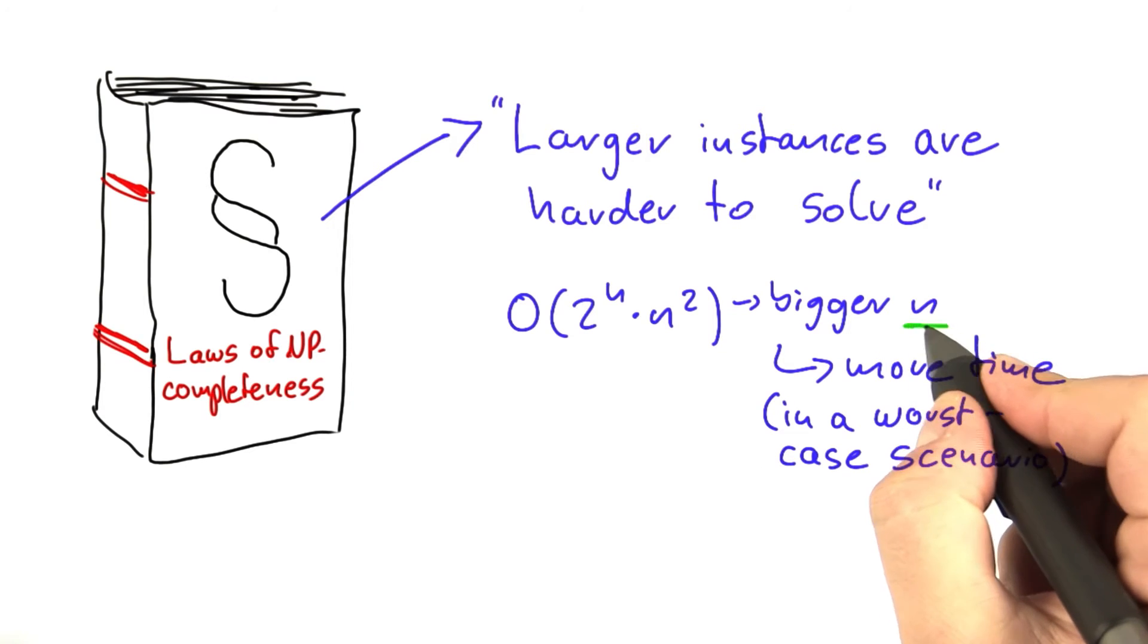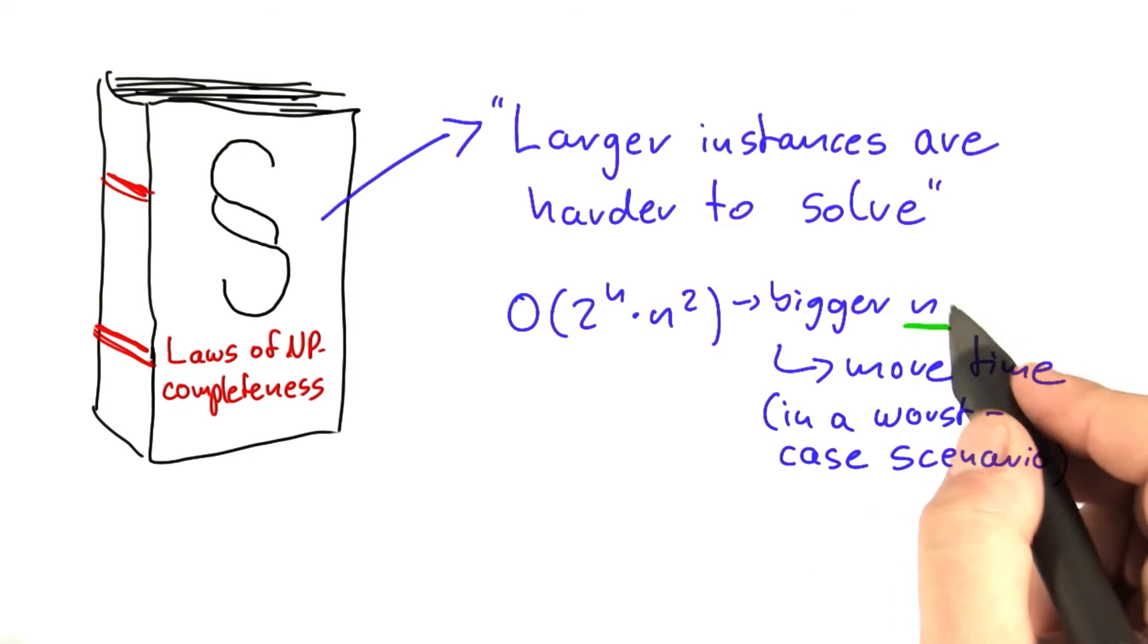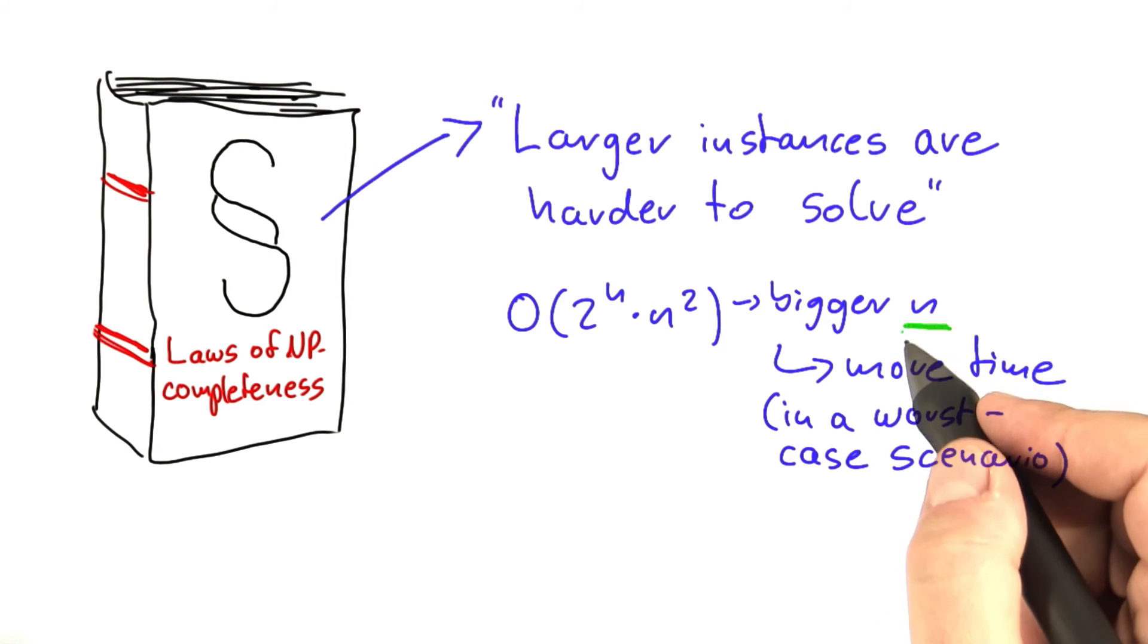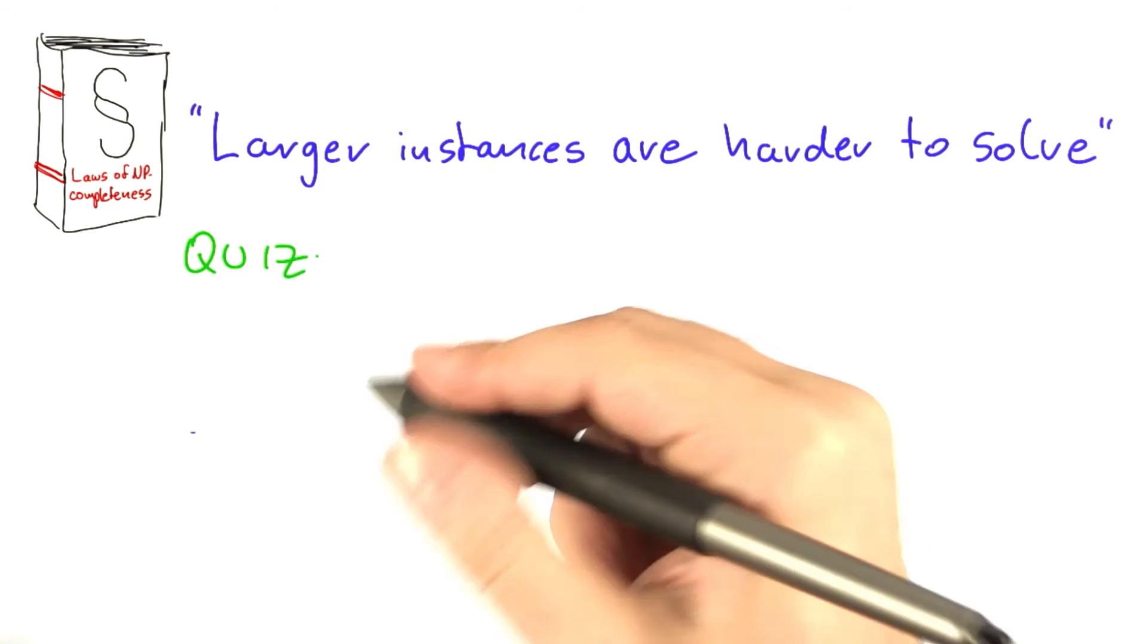Let's talk a little bit about this n here, the size of the input. Because this is often a very coarse estimate of how hard an input is actually to solve. And I'm going to give you one example for this. Or actually, I'm going to quiz you about this.